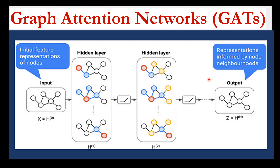Then comes the graph attention network, or GAT. Graph attention networks are a type of machine learning algorithm used for processing graph-structured data. They are similar to GCNs, but instead of performing a convolutional operation on the graph, GATs use an attention mechanism to selectively focus on important parts of the graph. In simple terms, GATs analyze graph-structured data by giving more weight to the parts of the graph that are most important to a given task.